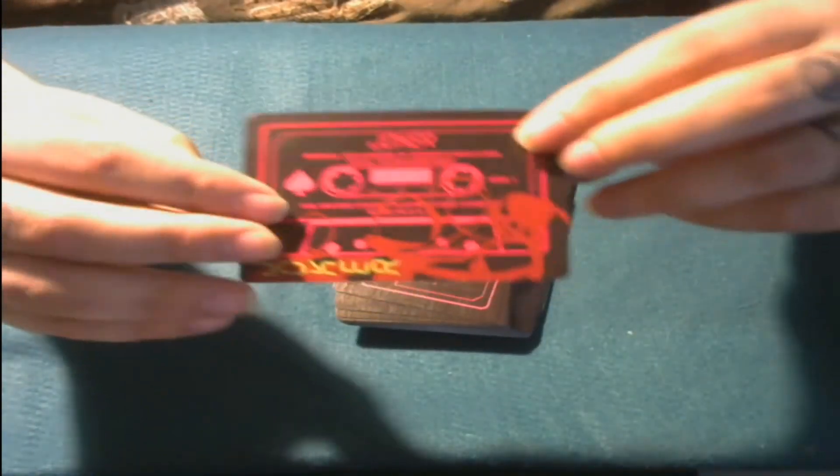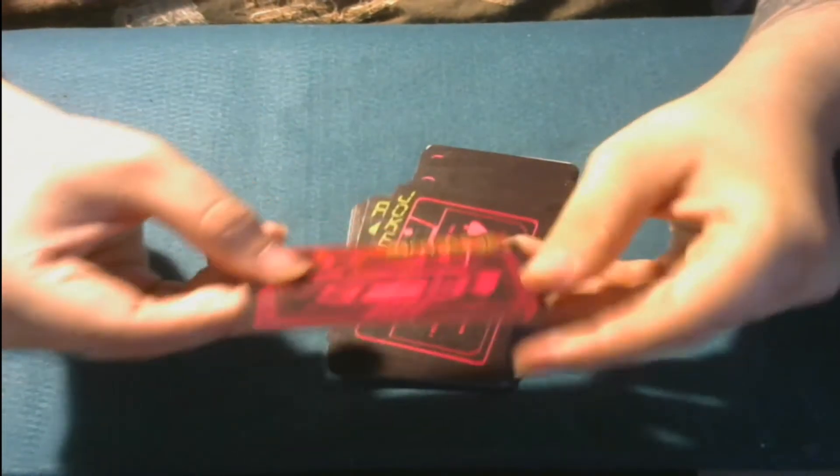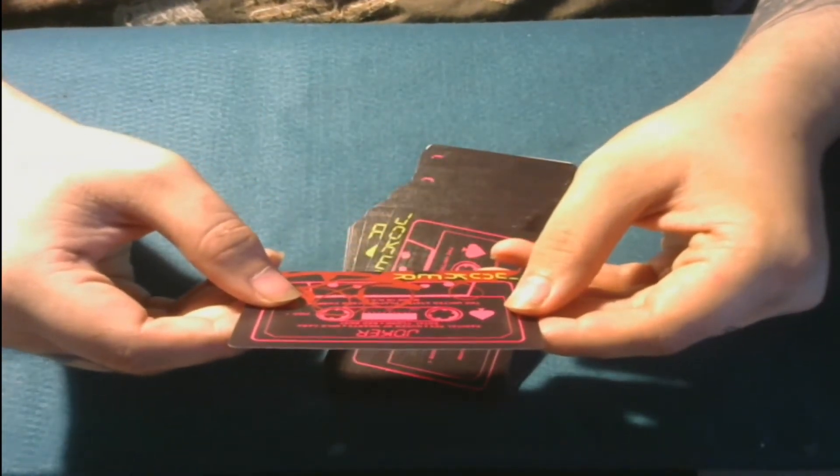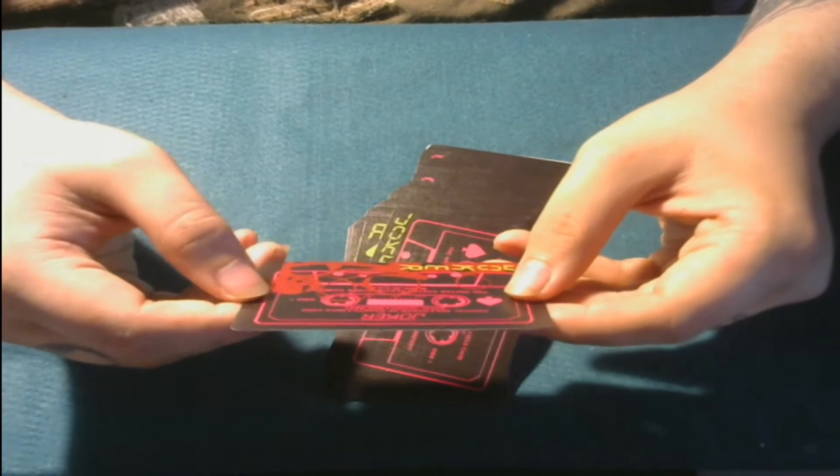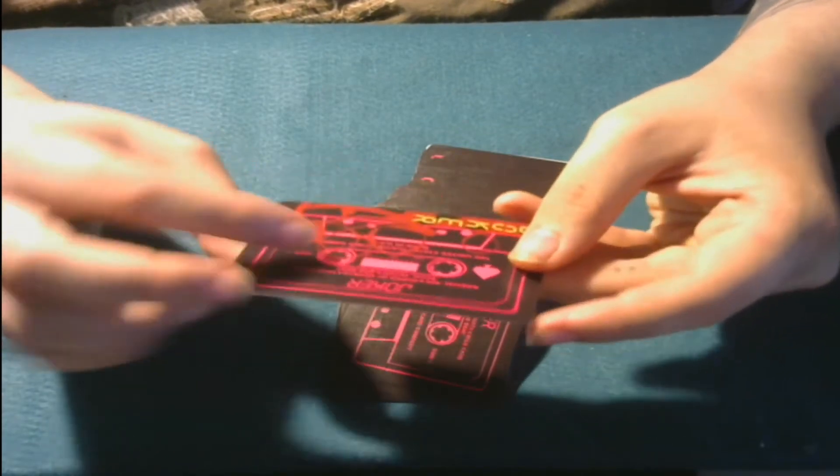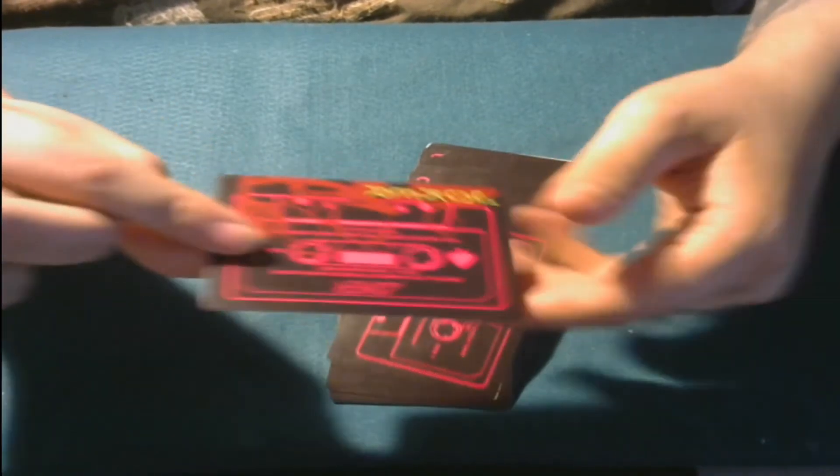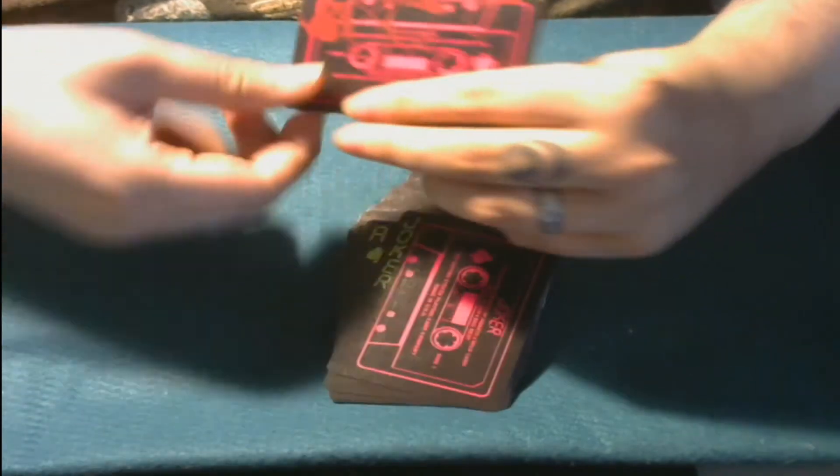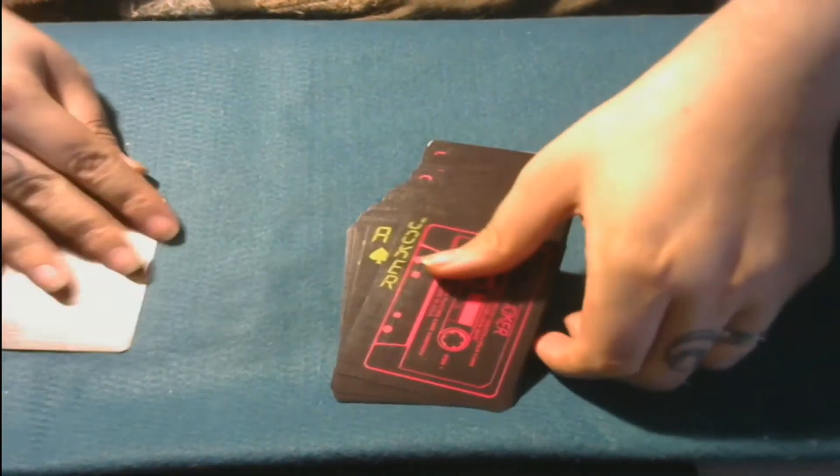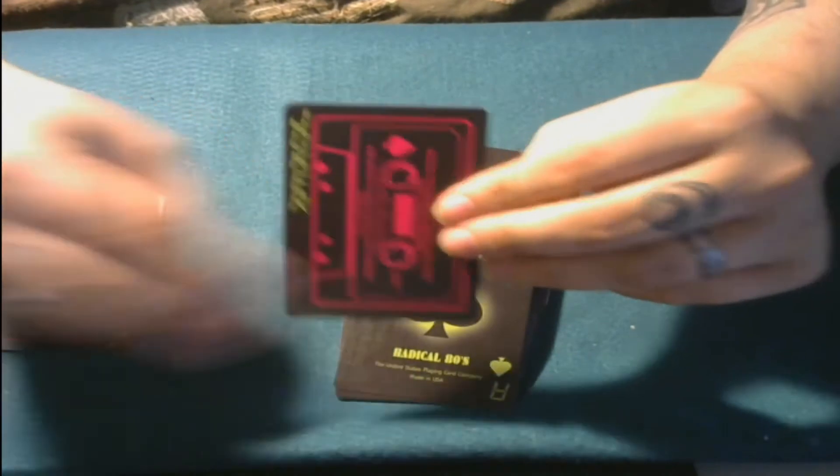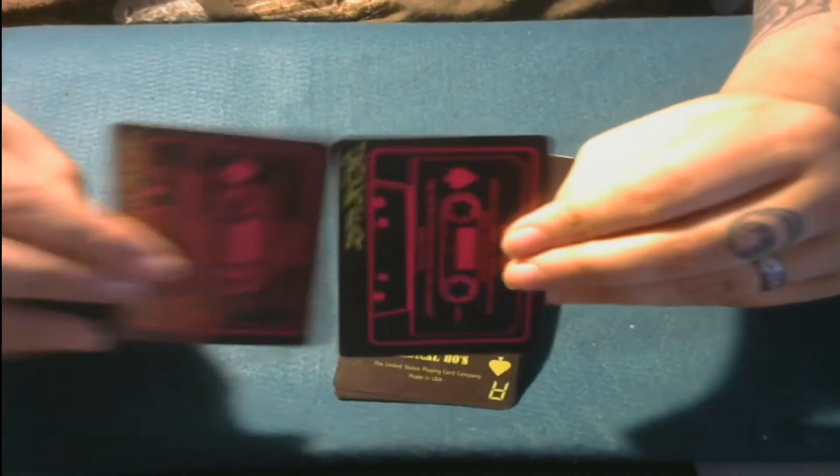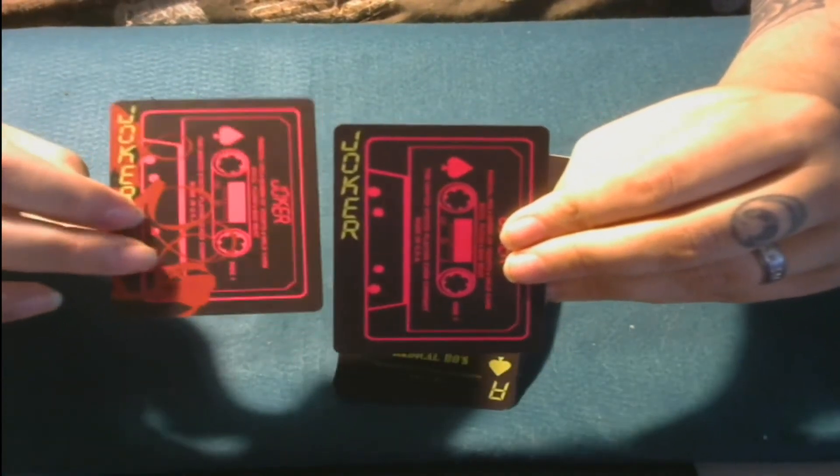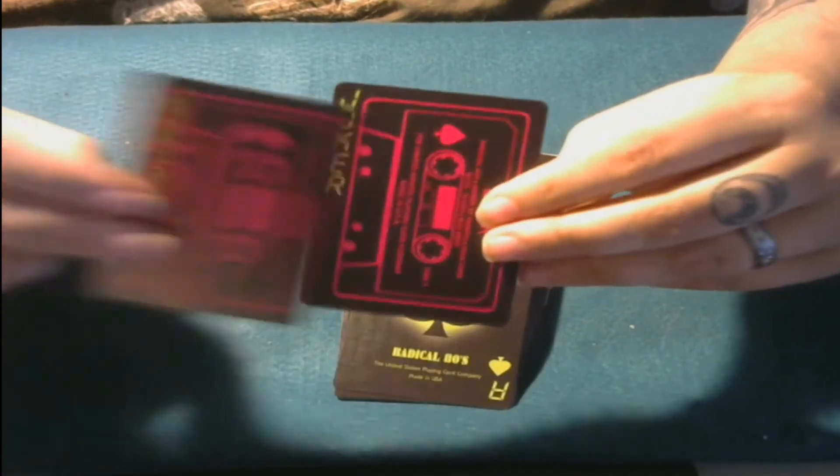When you first open it up, you get your Joker. This is what the Joker looks like. It's a pretty cool Joker. On the Joker, it says Radical 80s, Queen of Hearts, Wild Card, Royal Flush, Bad Beat, the United States Playing Card Company. This is side one, is what it says. Oh, it's just a cassette tape. And then Joker in a nice digital font here. Very nice. The next one, we have another Joker, but it's kind of different. This one has like a stained effect to it, and this one doesn't. So, that's pretty cool.